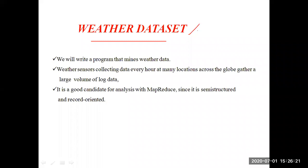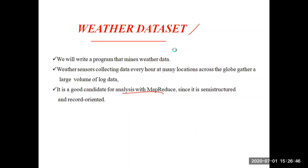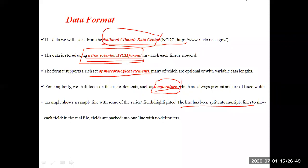The weather dataset will become the best example for analysis with MapReduce because MapReduce is used for analyzing large volumes of data. Since the weather dataset also contains large volumes of data, it is a good candidate for analysis with MapReduce. The data in the weather dataset is semi-structured and record-oriented, stored in line-oriented ASCII format with all values in a single line.